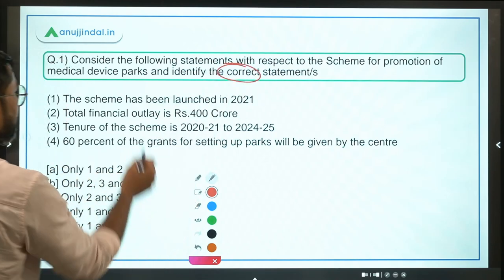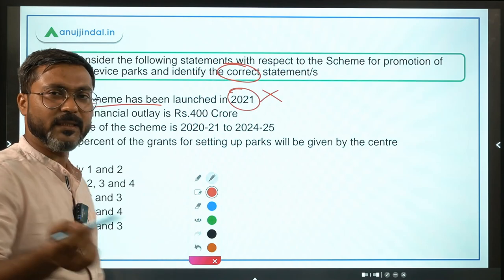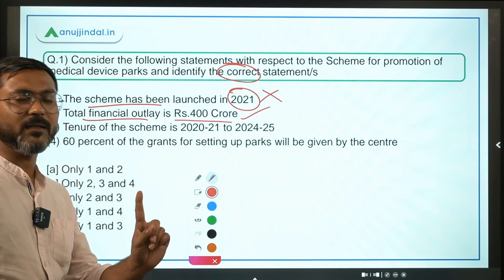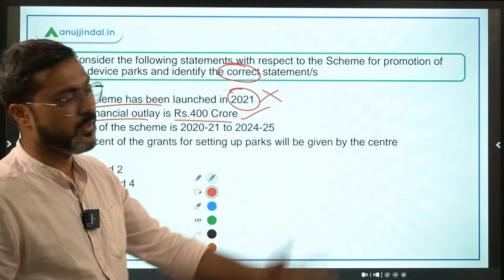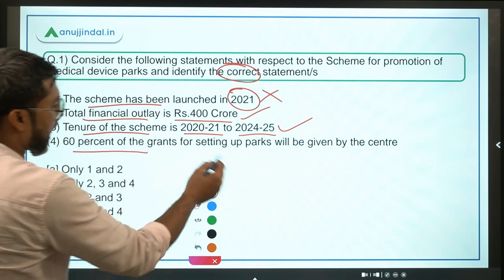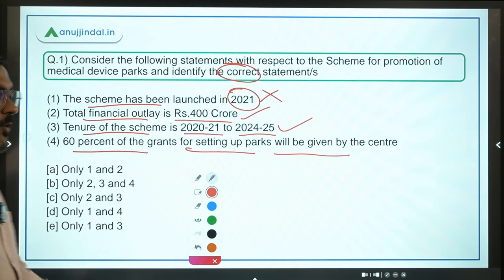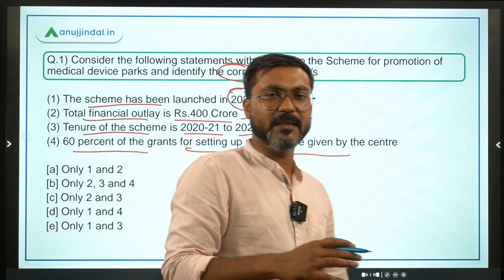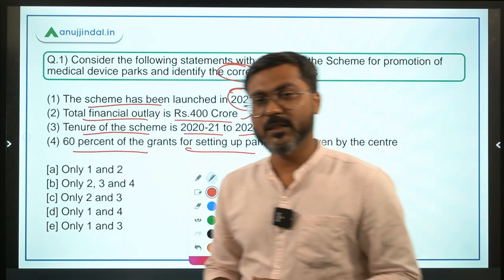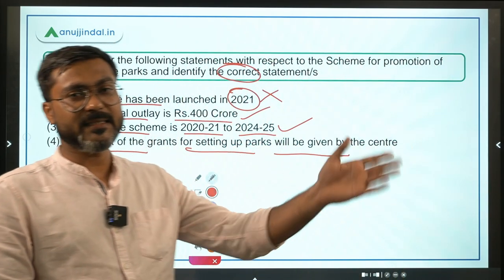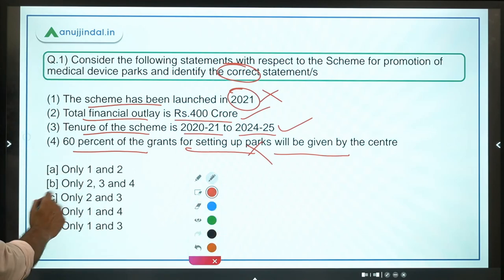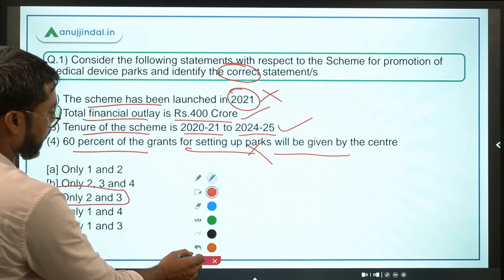Coming back to Question 1: Was the scheme launched in 2021? No — it was launched in 2020. Total financial outlay is rupees 400 crores, and for a single park a maximum of 100 crores will be provided — so four parks equals 400 crores. Tenure is 2021 to 2025 — correct. Was 60% of grants given by the centre? No — for normal states it is 70%, and for northeastern/Himalayan states like Himachal Pradesh it is 90%. So the correct answer is statements 2 and 3, making Option C correct.